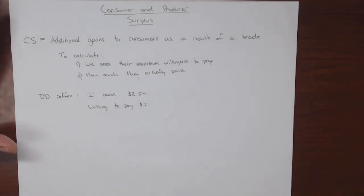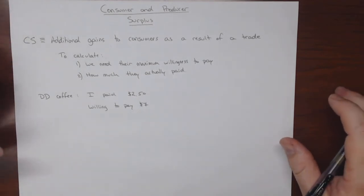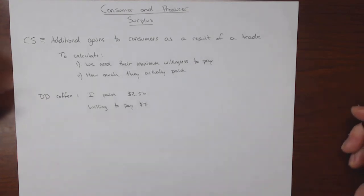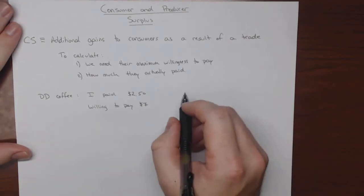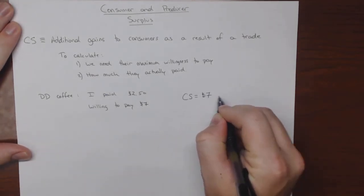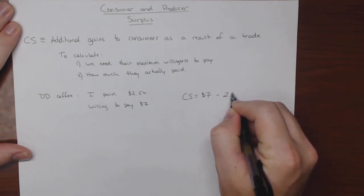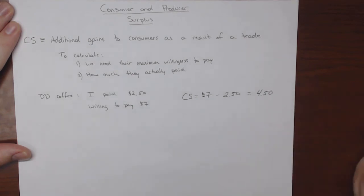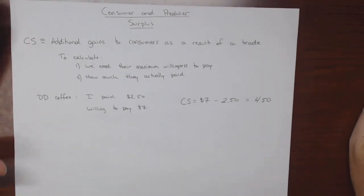I'd be willing to pay, because this was my first cup of coffee for the day, let's say $7 for it. That is the absolute most — if Dunkin' Donuts charged me $7, I would be basically indifferent between the $7 and the coffee. So my consumer surplus is equal to $7 minus $2.50, which equals $4.50 worth of additional value.